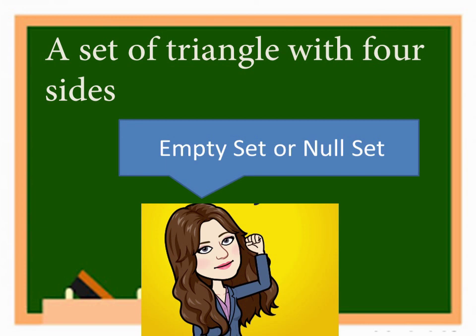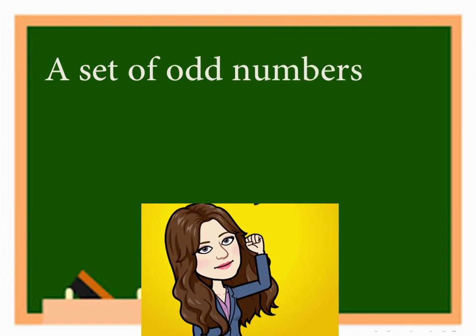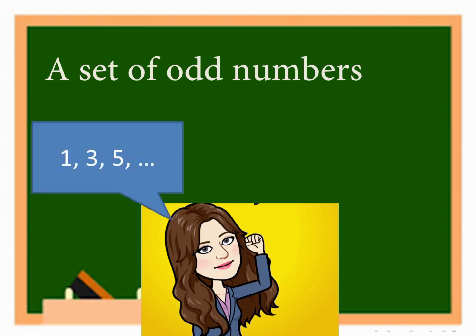Another one. A set of odd numbers. What are odd numbers? They are numbers that are not divisible by two. So, what are the elements of this set? One, three, five, and so on. What can you say about this set? Is it finite, infinite, or null set? The answer is infinite set.